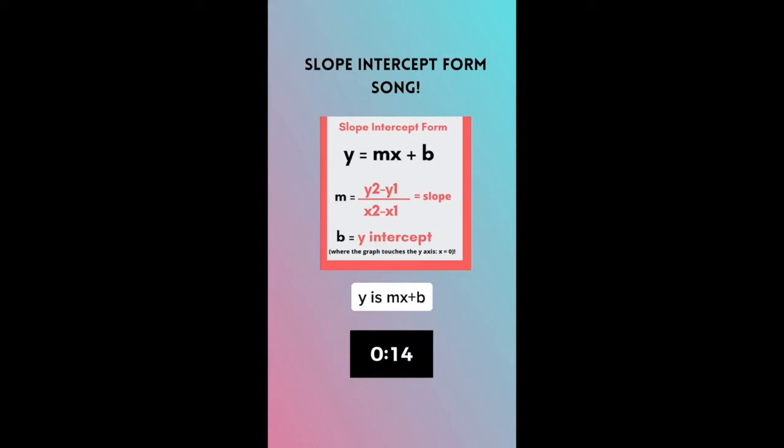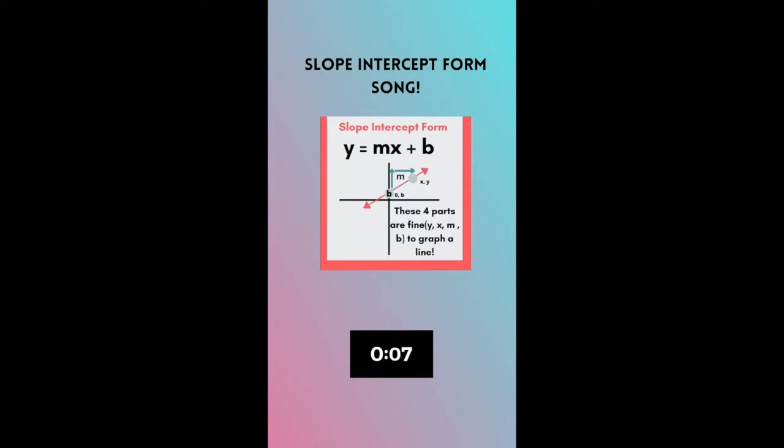Y is mx plus b, y is mx plus b. M is the slope of the line, while b is the y-intercept. Y is mx plus b, y is mx plus b, these four parts are fine to graph a line.